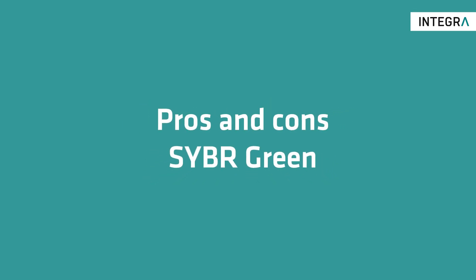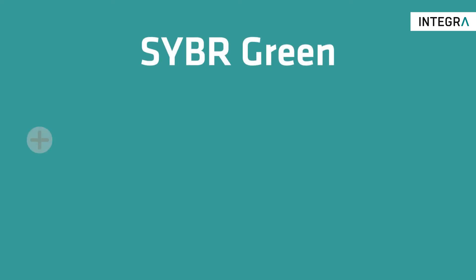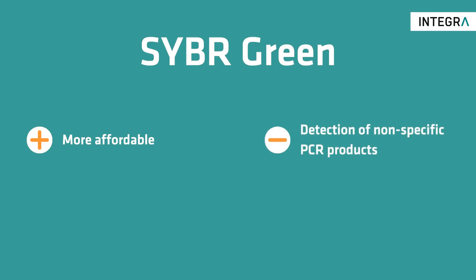The advantage of the SYBR Green method is that it is more affordable to buy SYBR Green I dye than to design and purchase target-specific TaqMan probes. The downside of the SYBR Green assay, however, is that the dye binds to any double-stranded DNA sequence, meaning you could also detect fluorescence emitted from non-specific QPCR products, such as primer dimers.